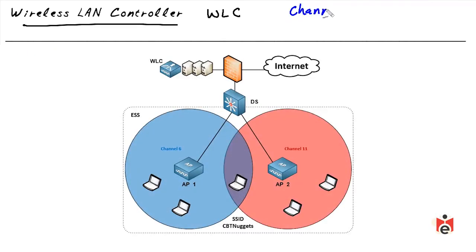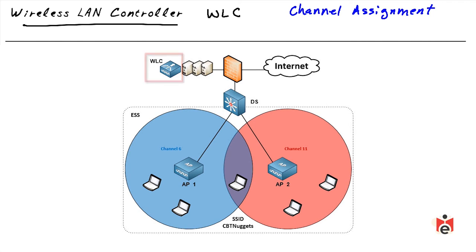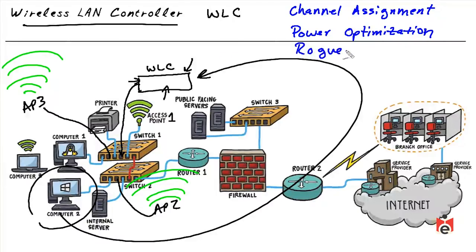In addition to simplified management, a centralized wireless controller handles channel assignment automatically. In the 2.4 GHz space, non-overlapping channels are 1, 6, and 11 — the controller determines the best assignment and tells each access point accordingly. Using live feedback from access points, the controller adjusts transmit power up or down for optimal coverage. If an unauthorized rogue access point is plugged in, existing access points report it to the controller, which can jam the rogue's signals and pinpoint its location in the building so staff can physically remove it.